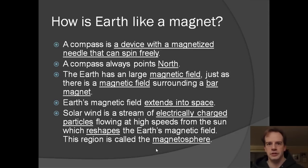So Earth is a magnet, believe it or not, a really big one. And we know this because a compass is a device with a magnetized needle that can spin freely and it will always point to magnetic north. And the Earth has a large magnetic field just as there is a magnetic field around a bar magnet. And this is caused by the turning inside the Earth of the molten iron. It's called a magnetic dynamo.